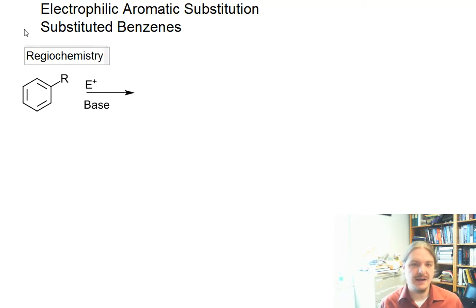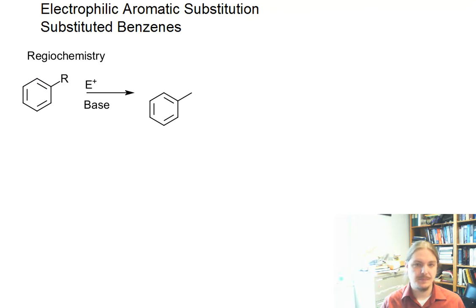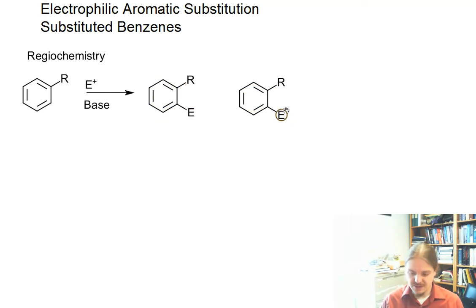One, it has to do with regiochemistry. And so once there's a substituent already on the ring, there are actually three possible isomers that can be formed. The electrophile can end up on the ortho position, the meta position, sorry, or the para position.